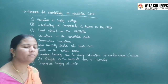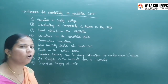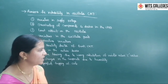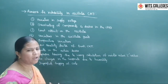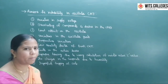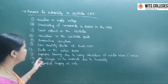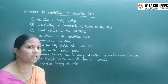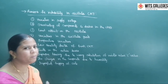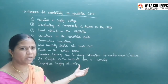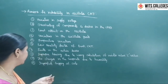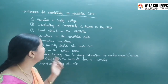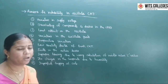Faults in the active devices — the active device here is the transistor, and if there is any fault in the transistor there is instability. Improper biasing due to wrong calculation of resistance and capacitor values also causes instability. Changes in component values due to humidity — if capacitor and inductor values change because of humidity, instability of oscillations results. Improper tapping of the coils also leads to instability. These are the reasons for instability in oscillator circuits.